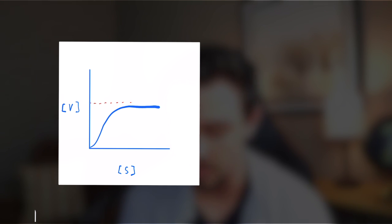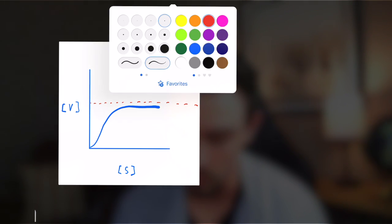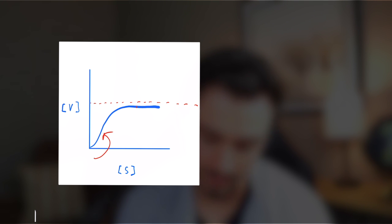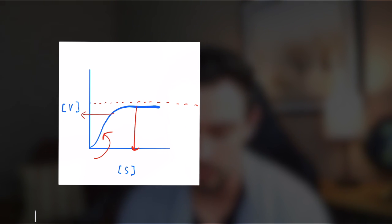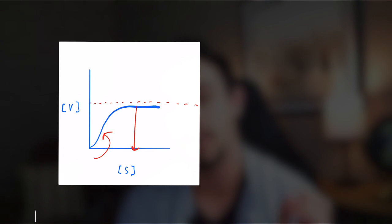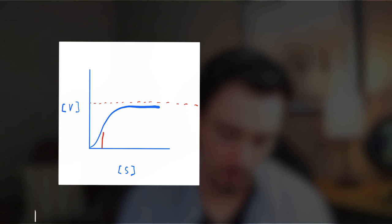This is what a Michaelis-Menten graph looks like. The line toward the top starts to level off, asymptotically approaching Vmax, which looks like a straight line plateauing. You can identify the different variables from the graph: substrate concentration by finding where the curve intersects and tracing straight down to the x-axis, and velocity by tracing horizontally to the y-axis. Putting those together, you can see how much substrate it takes to reach a specific velocity.